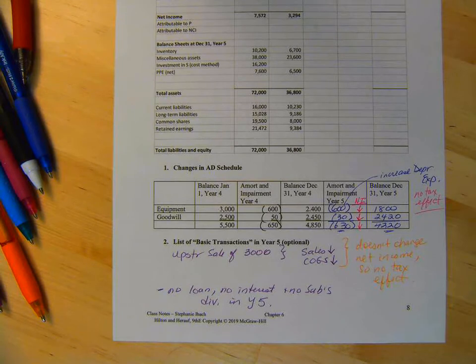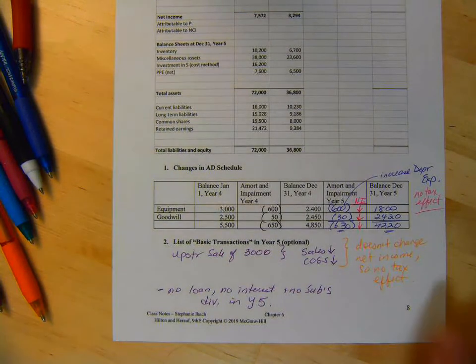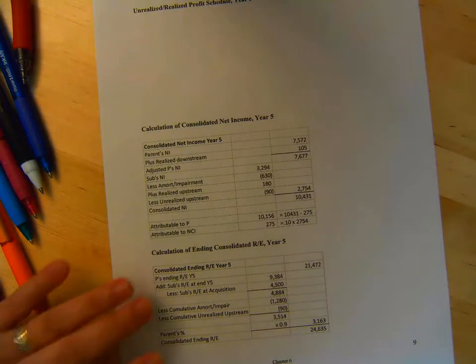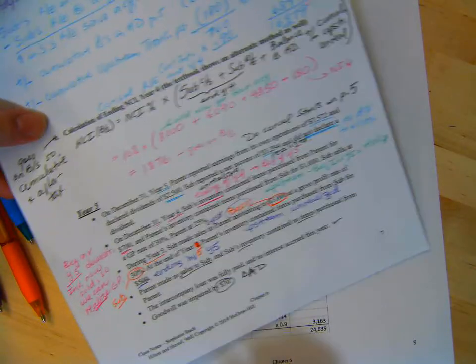Okay. On the next page, page 9, we've got the realized unrealized profit schedule or change in intercompany profits, or intercompany profits realized unrealized, something like that. So keep page 7 handy because we're going to need that.